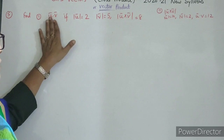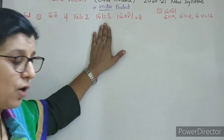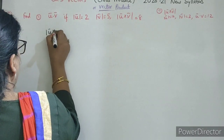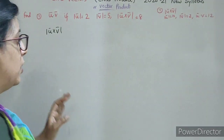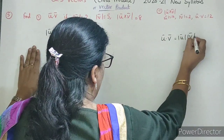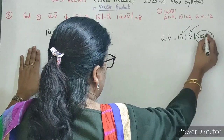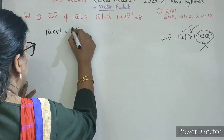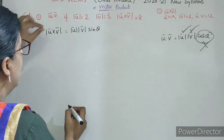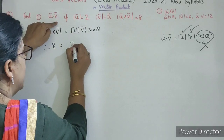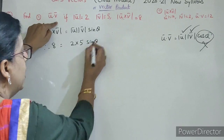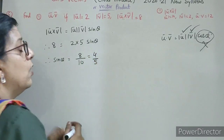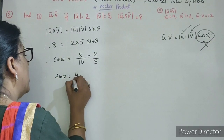Students, fifth question mein: we have to find u dot v. Mod of u diya hai, mod of v diya hai, and mod of u cross v hume diya hai. Kaise karenge? Rough mein likhte hain: mod of u cross v = mod u × mod v × sin theta. Values put karte hain: 8 = 2 × 5 × sin theta. Therefore sin theta = 8/10 = 4/5. Sin theta ki value ho gayi 4/5.